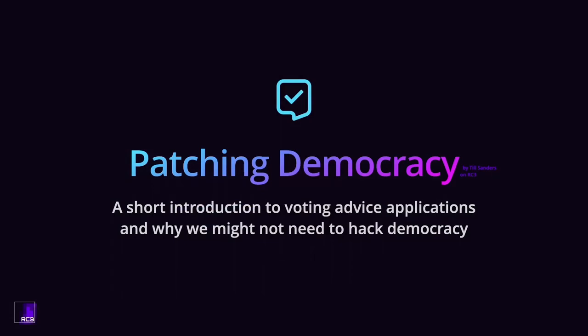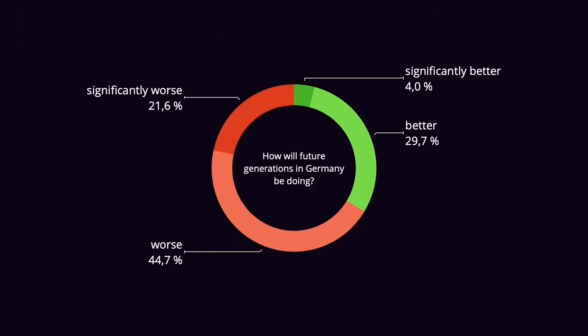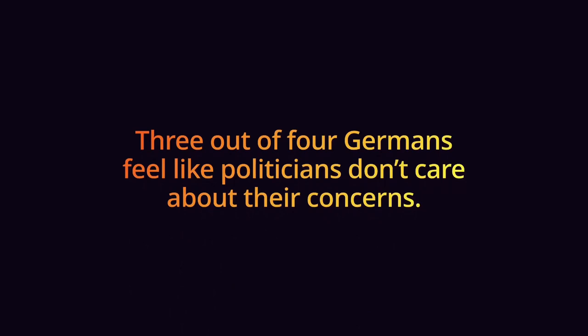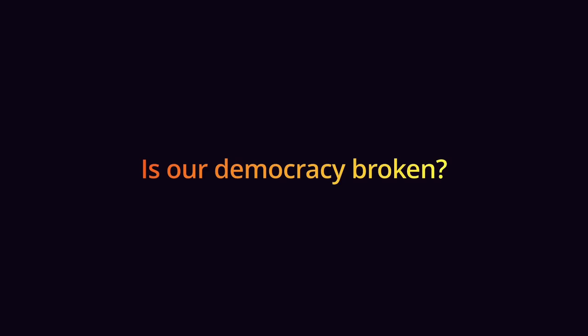Welcome to 'Patching Democracy' — a short introduction to applications like the German Wahl-O-Mat and why we might not need to hack democracy. Researchers of the Friedrich Ebert Foundation found that only a third of the population believes in a brighter future. Less than half of our society is satisfied with how our democracy works, and in parts of Germany this drops even further to about a third. Three out of four Germans feel like politicians don't care about their concerns, and many even agree it doesn't make a difference which parties form the government.